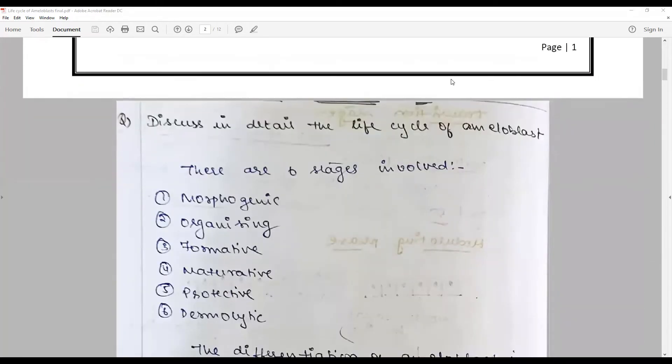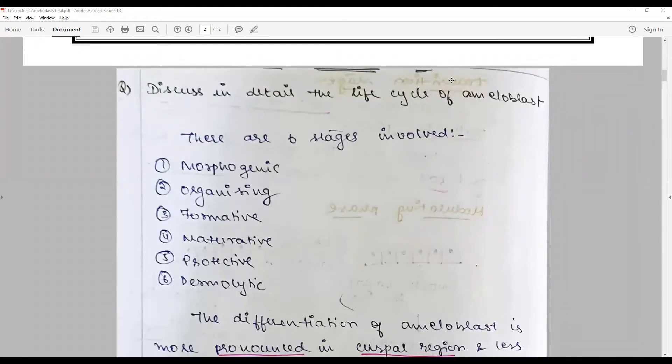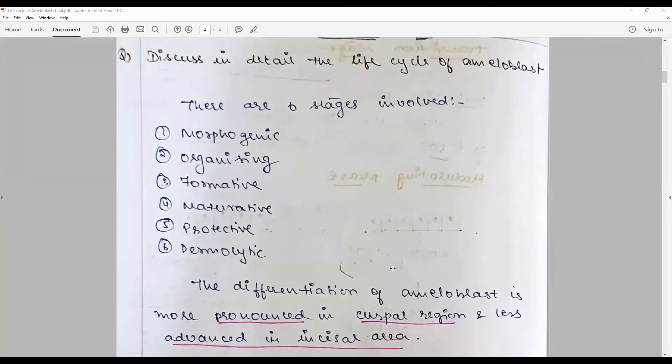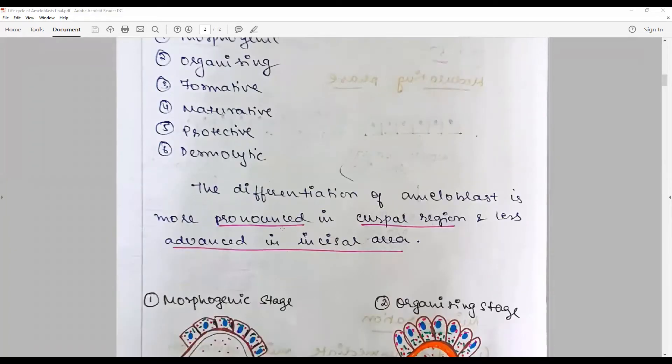To proceed, we first say that ameloblast is the cell responsible for enamel formation. The differentiation of ameloblast is more pronounced in the cuspal region and less advanced in incisal regions. As we proceed down, there are about six stages involved: morphogenic, organizing, formative, maturative, protective, and desmolytic stages.